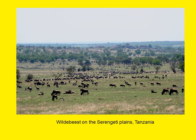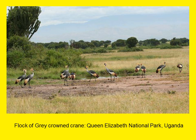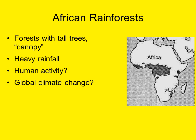An image shows the annual migration on the Serengeti plains in Tanzania of the wildebeest, who travel thousands of miles each year back and forth across the Serengeti plains. Another image shows a grey crowned crane in Uganda, also part of the savannah region.